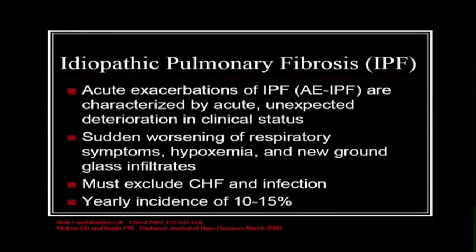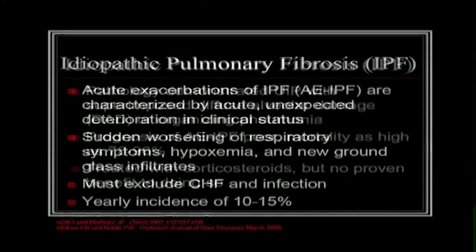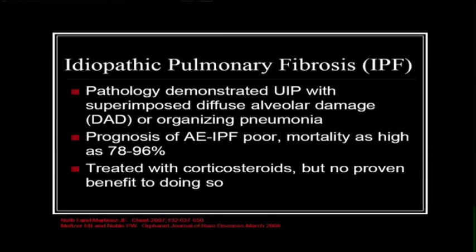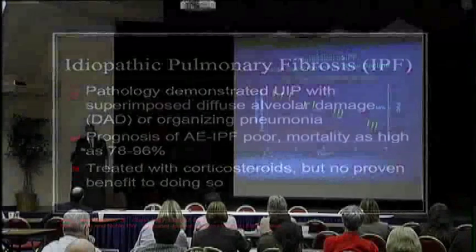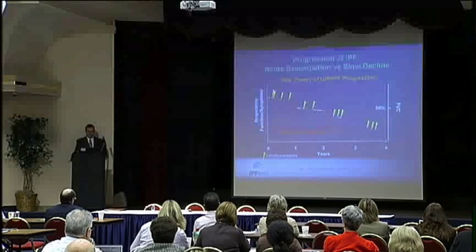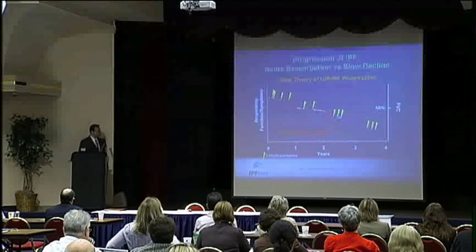Acute exacerbations are characterized by acute, unexpected deterioration in clinical status, sudden worsening of symptoms, hypoxemia, and new ground glass infiltrates. If this is in the differential, you must exclude CHF and infection. The yearly incidence is thought to be about 10% to 15%. The pathology is UIP with superimposed DAD or organizing pneumonia. The prognosis of these acute exacerbations is poor — mortality can be as high as 96%. It's treated generally with corticosteroids, but there's no proven benefit.